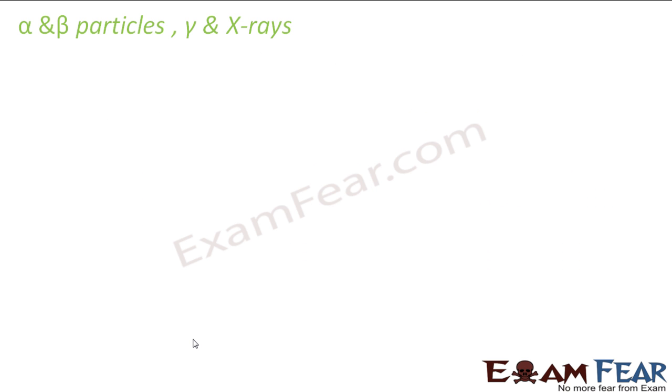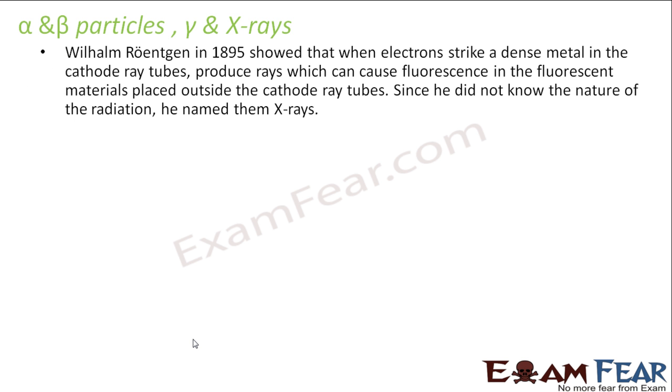These will be needed for the next experiments. In 1895, Wilhelm Roentgen showed that when electrons strike a dense metal, it produced rays which cause fluorescence.